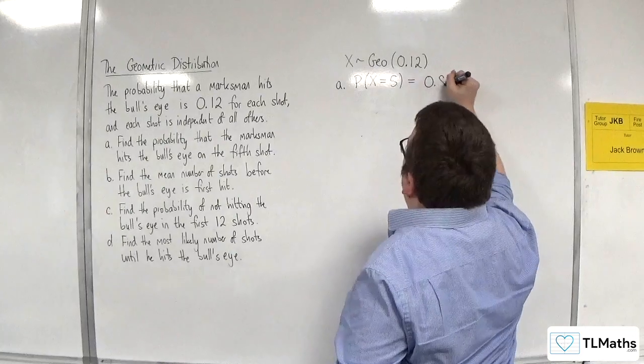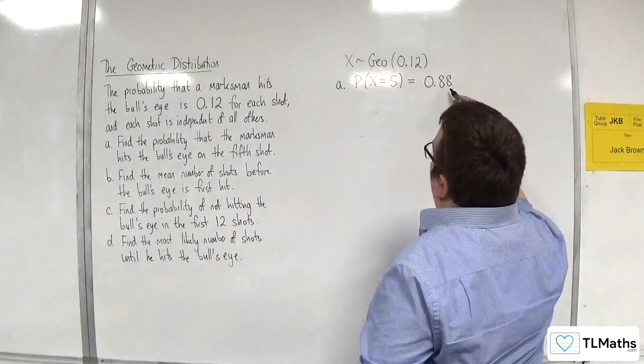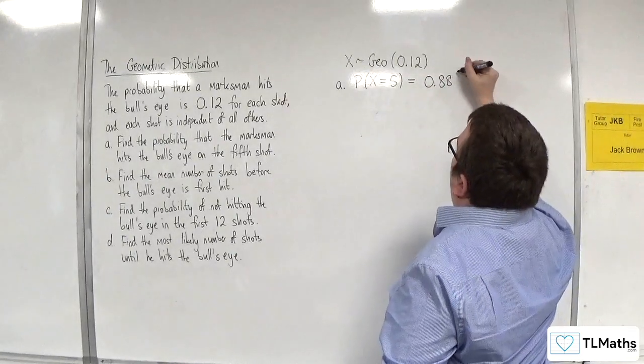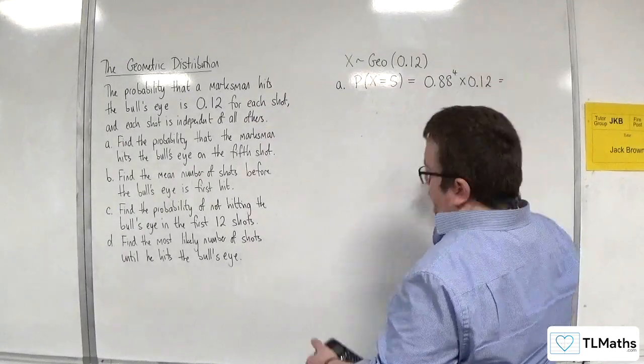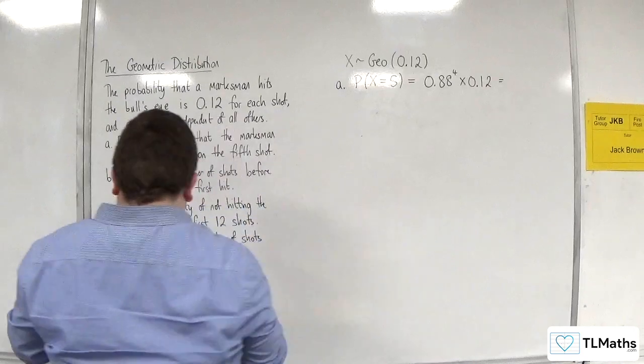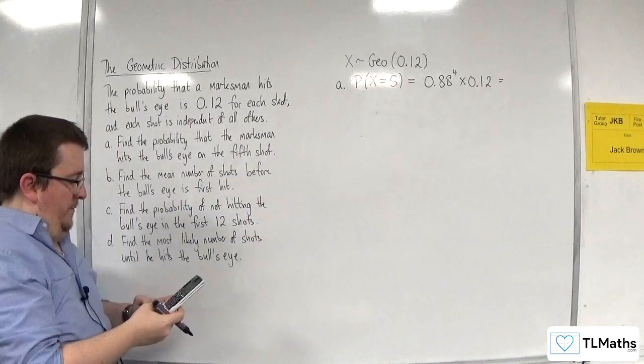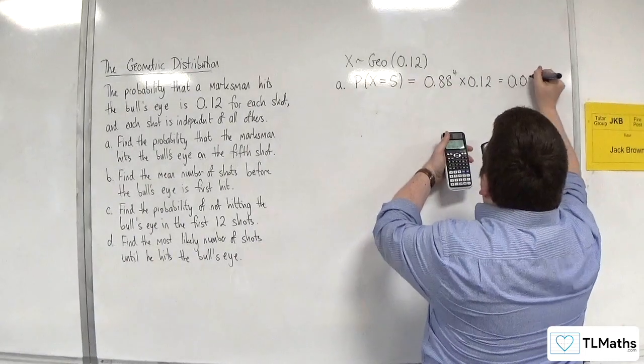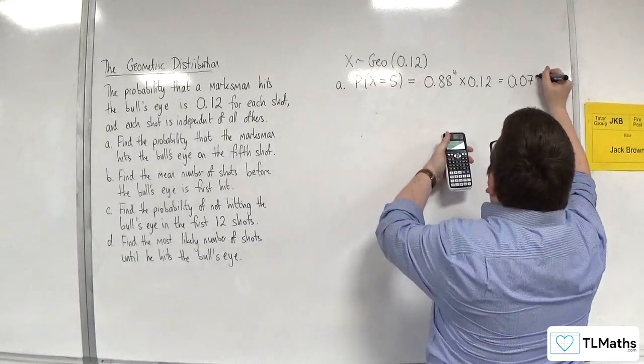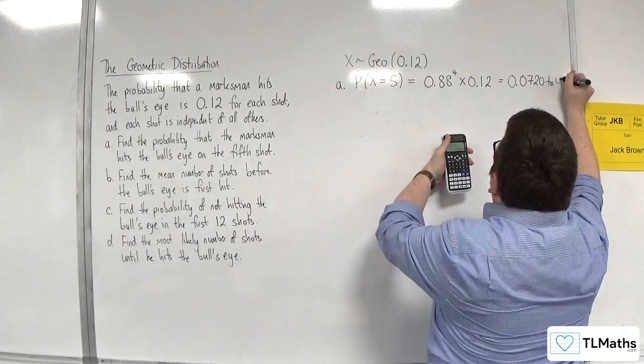And so, that would be 0.88, the probability that he doesn't hit it, to the power of 4, times by the probability 0.12. So, 0.88 to the power of 4, times 0.12. And that is equal to 0.0720 to four decimal places.